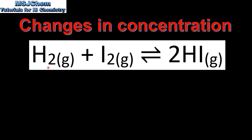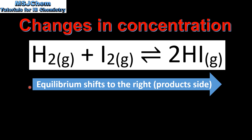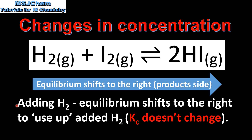Let's look at the effect of adding hydrogen gas to this system at equilibrium. If we add hydrogen gas to the system at equilibrium, the equilibrium will shift to the right — that's the product side. So by adding hydrogen, the equilibrium shifts to the right to use up the added hydrogen. If we make changes in concentration, the value of Kc does not change.